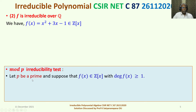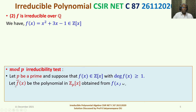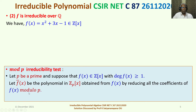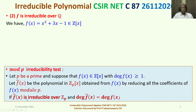Let p be a prime number and suppose that f(x) belongs to Z[x] with degree of f(x) ≥ 1. Let f̄(x) be the polynomial in Zp[x] obtained from f(x) by reducing all coefficients of f(x) modulo p. Here Zp is the ring of integers modulo p, where p is prime, and it is a field. If f̄(x) is irreducible over Zp and degree of f̄(x) equals degree of f(x), then f(x) is irreducible over Q.